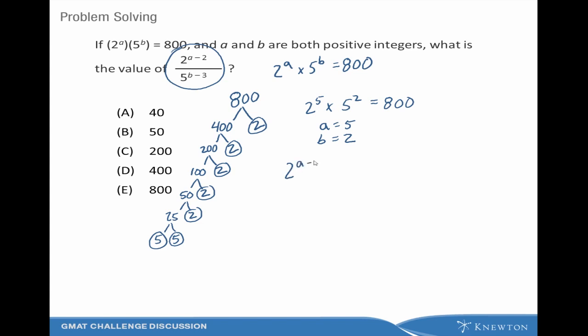Now that we've found the variable values, we can say that A minus 2 is actually 5 minus 2, which equals 3.